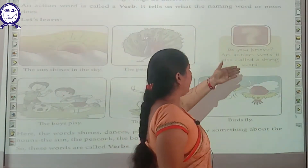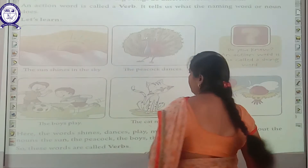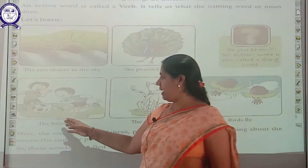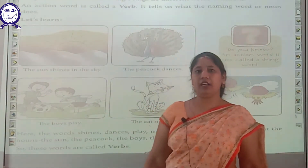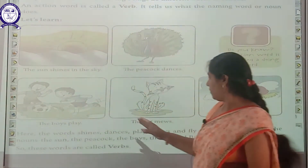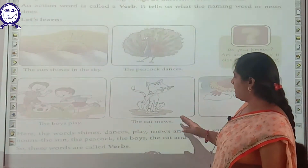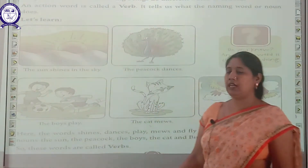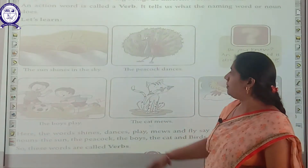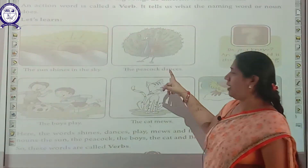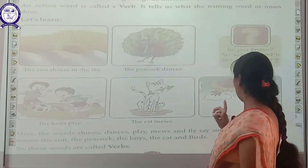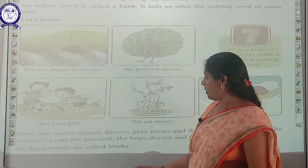An action word is also called a doing word. The boys play — so play is a verb. The cat mews — so mews is a verb. Birds fly — so fly is a verb. In these sentences, shines, dances, play, mews, and fly are all verbs.